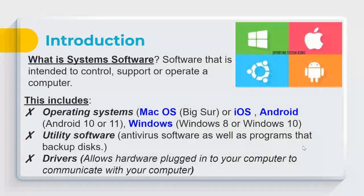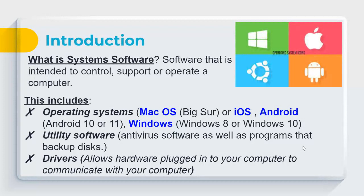Thinking back to grade 10, system software is software intended to control, support, or operate a computer. There are three main categories: the operating system, utility software, and drivers. The type of computing device you have determines what operating system you use.